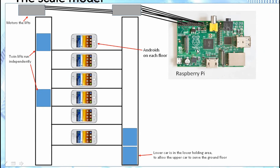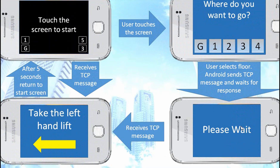The scale model: there will be a Raspberry Pi which controls the whole of the scale model. There'll be an Android on each floor which communicates to the Raspberry Pi when the passenger chooses their floor. In the model there are two lifts running independently, and the motors are at the top. Also there's a holding area for one of the lifts to go into.